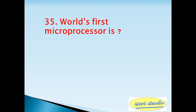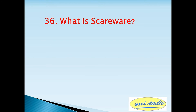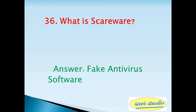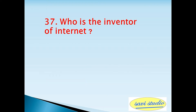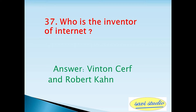Thirty-fifth question: world's first microprocessor is? Answer: Intel 4004. Thirty-sixth question: what is scareware? Answer: fake antivirus software. Thirty-seventh question: who is the inventor of the internet? Answer: Vint Cerf and Robert Kahn.